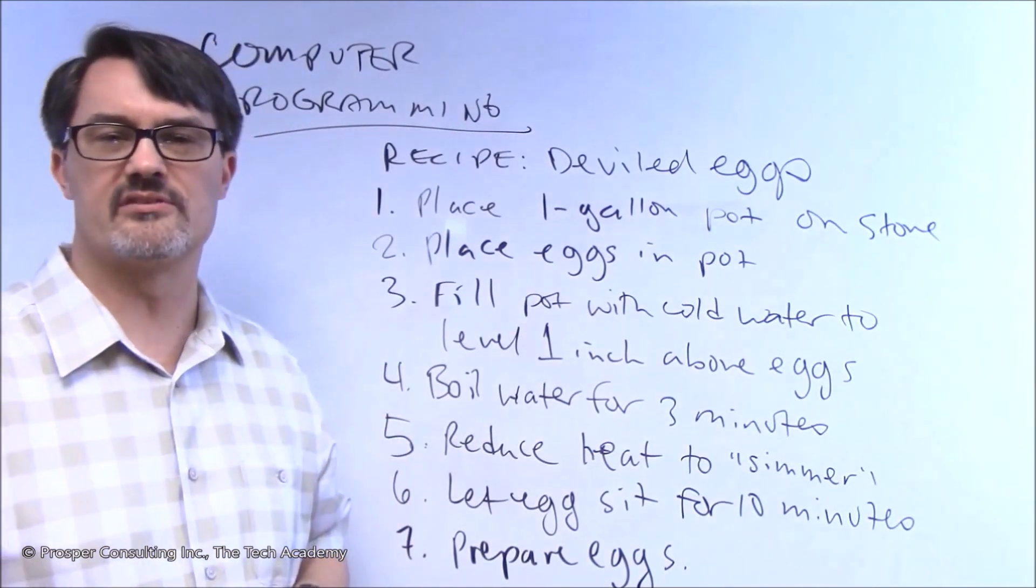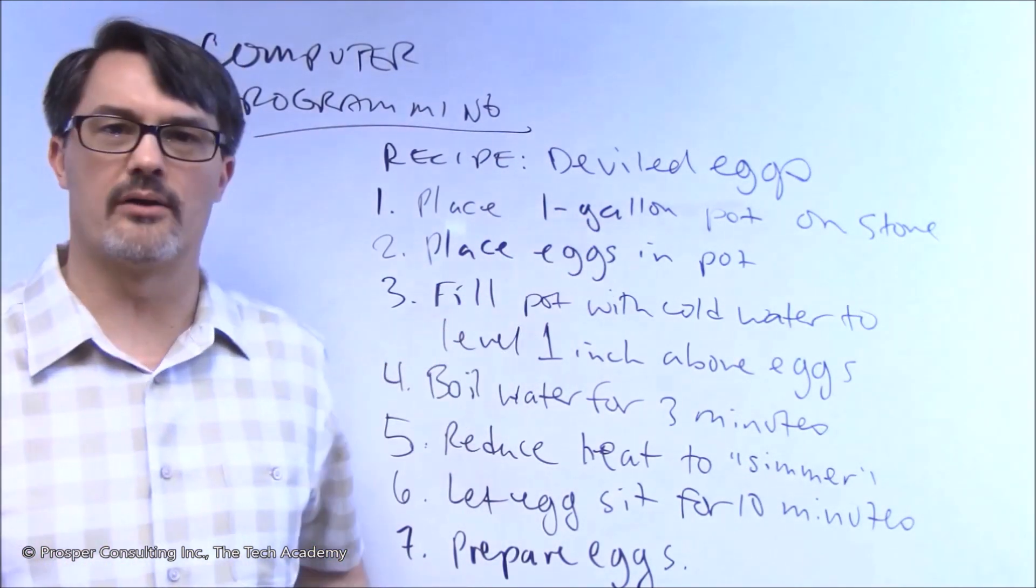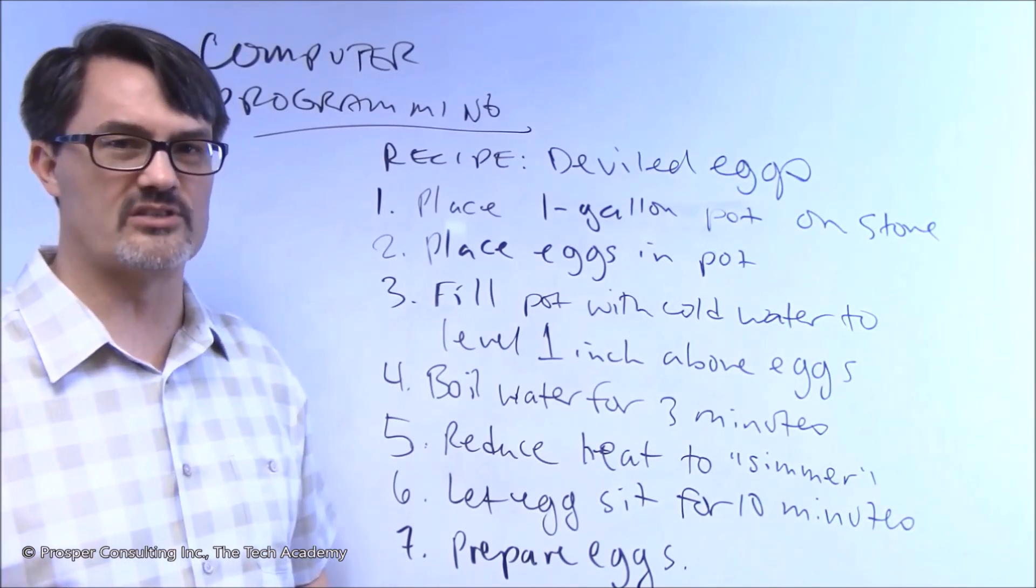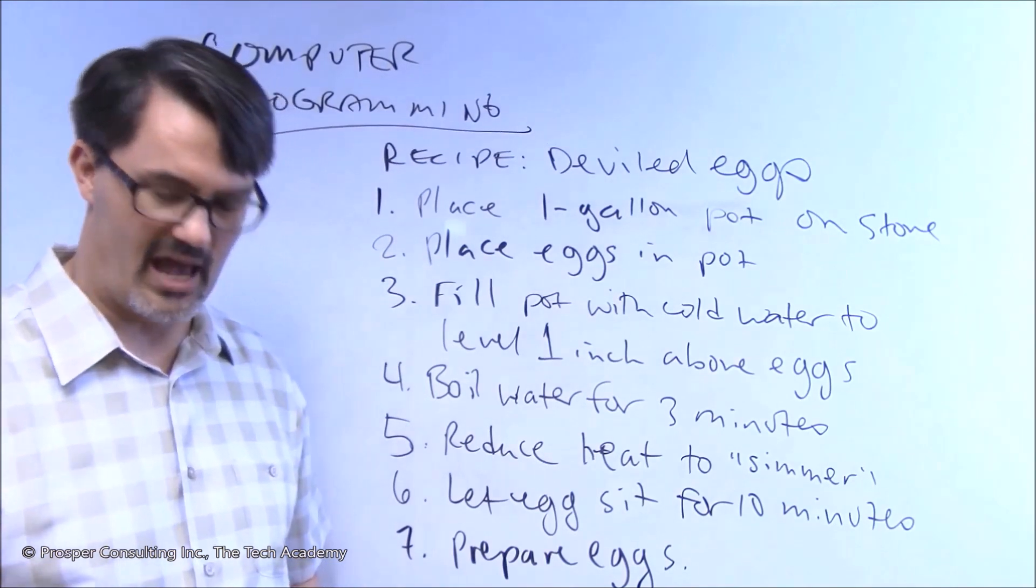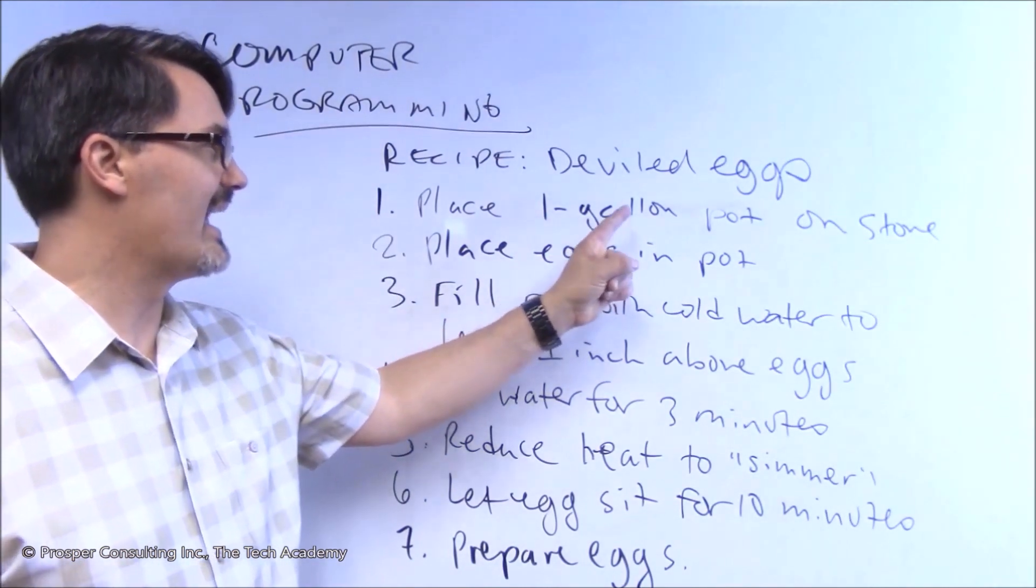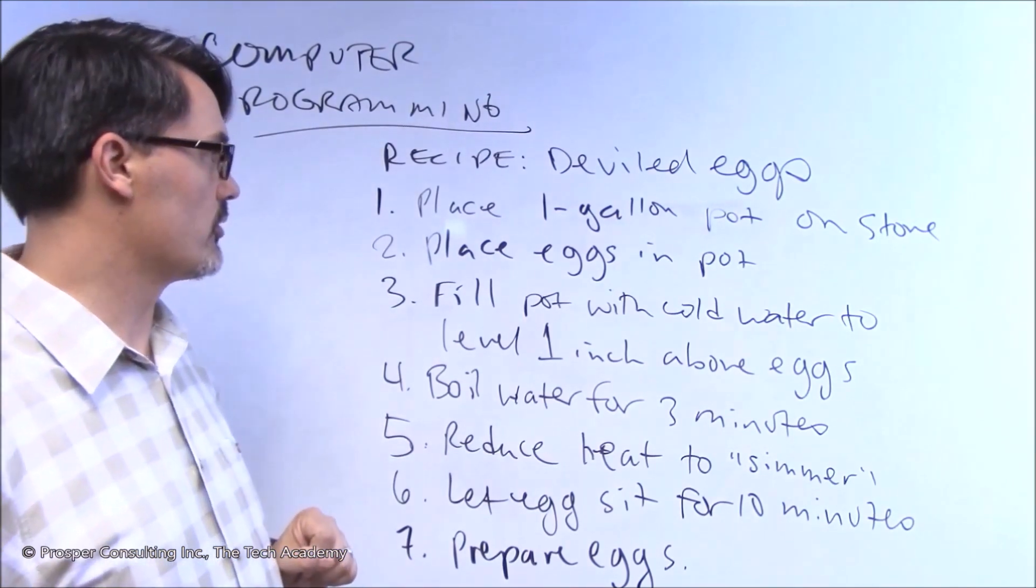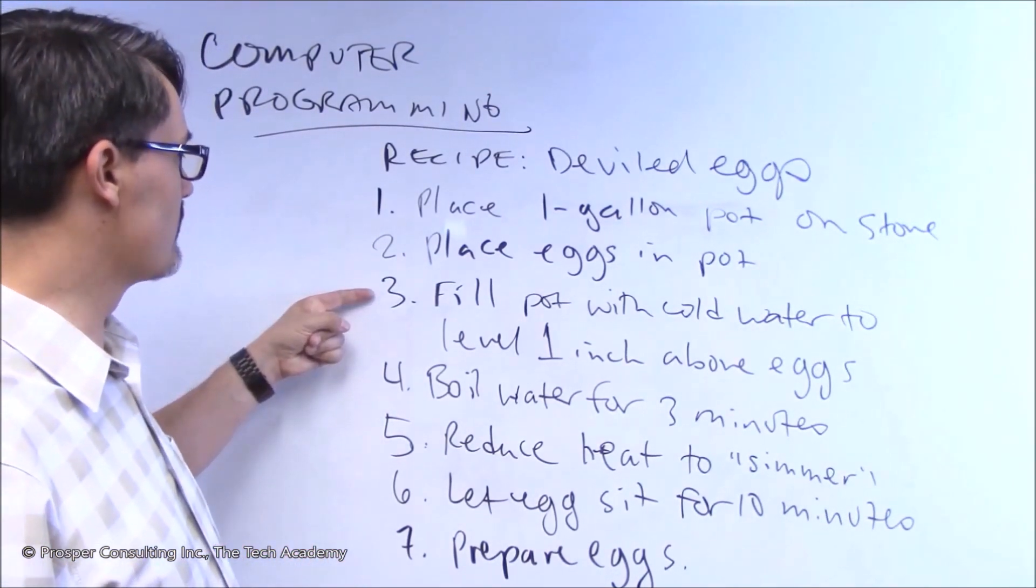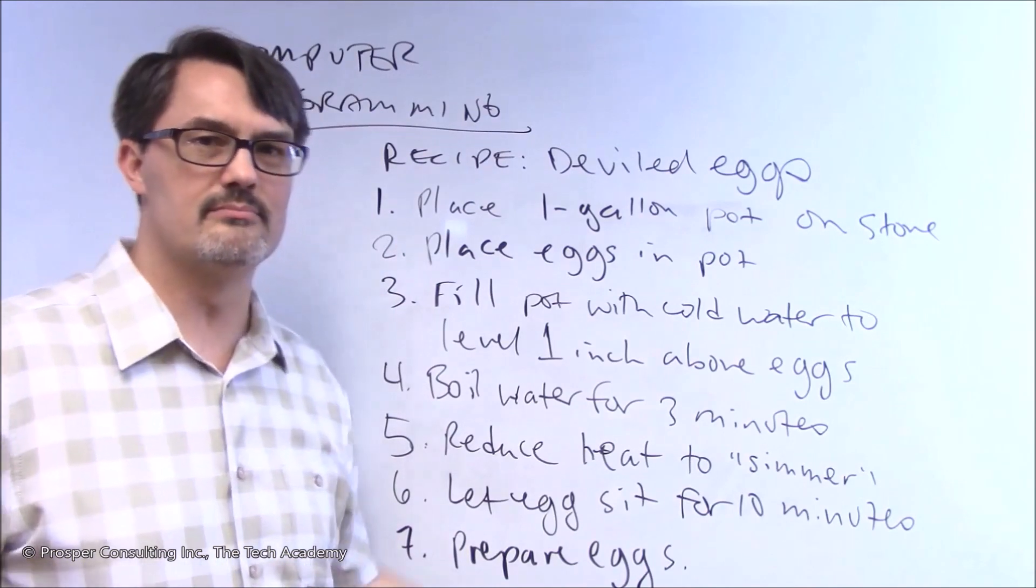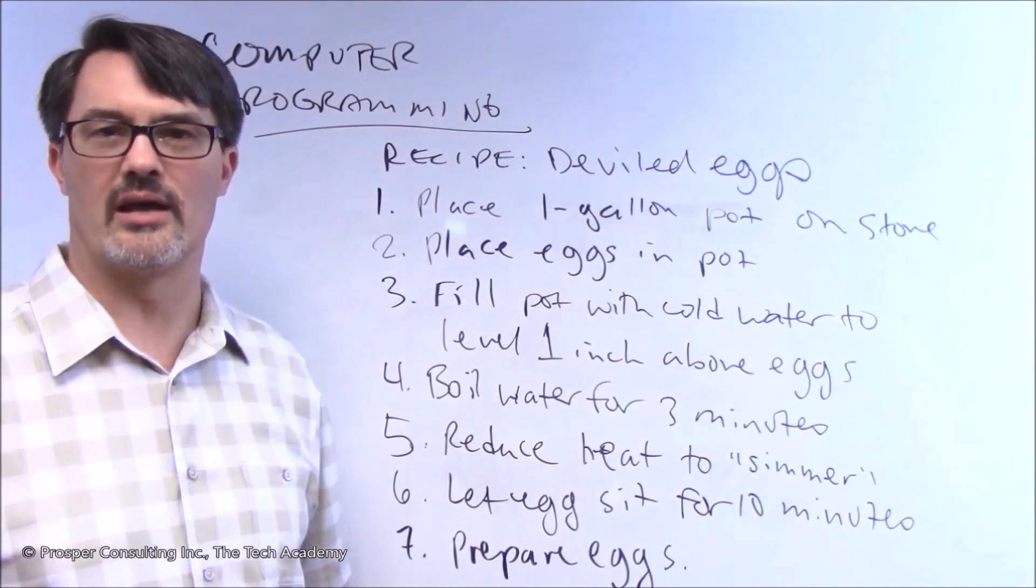Now, a couple of things about this in terms of making it be an analogy to a computer program. We specified the exact size of the pot. We didn't just say put a pot on the stove - that can mean a lot of different things. You have a 40 gallon pot that you use for giant crawfish boils, or you can have a half ounce pot from a doll's tea set. So we specify exactly what it is. Two, these steps are in exact order. You would not do number three before you do number two. Number three is fill the pot with cold water to a level one inch above the eggs. If you haven't put the eggs in the pot, that doesn't make any sense at all. And you wouldn't prepare the eggs before you hard boiled them, or that could get messy.